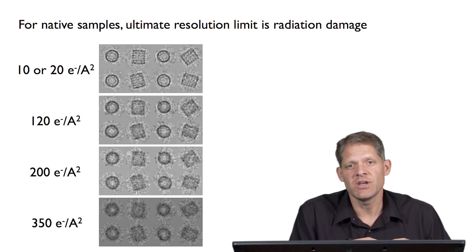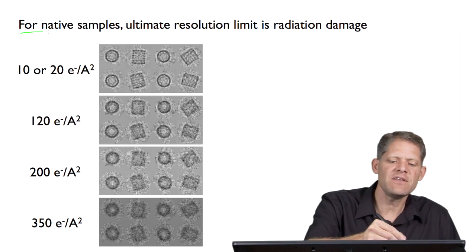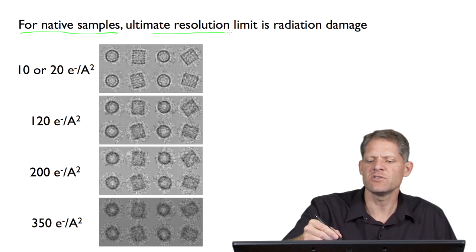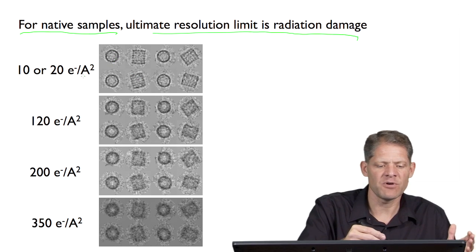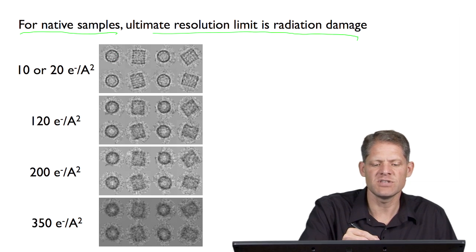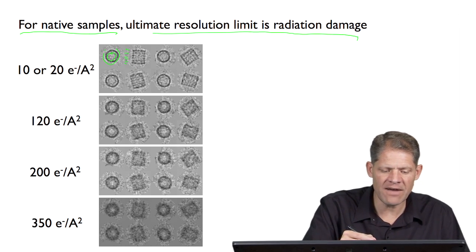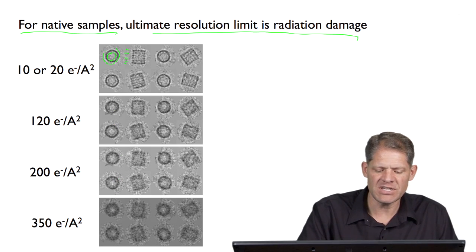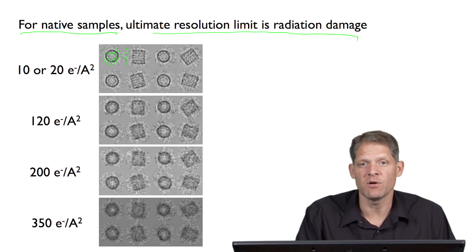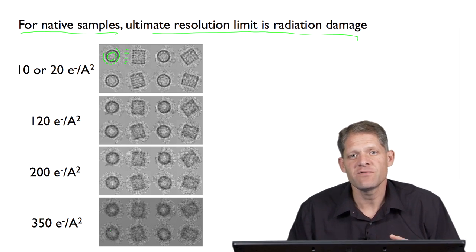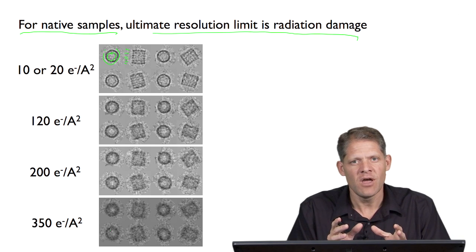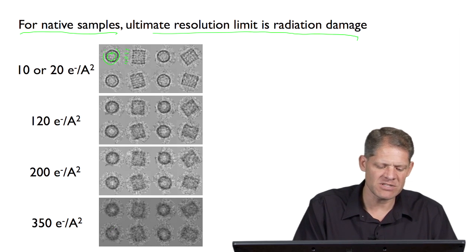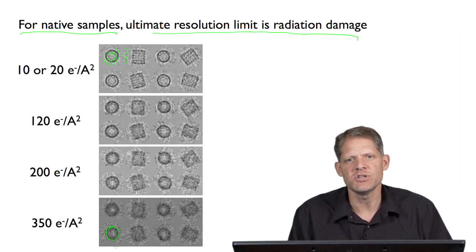The ultimate resolution limitation in tomography depends on what kind of sample we're imaging. For native samples, frozen hydrated material, the ultimate resolution limit is radiation damage. I showed earlier a series of hemocyanin molecules — after imaging with just tens of electrons per square angstrom, you could still see they were barrel-shaped, see the inner ring, and that they were stacks of six layers. But after applying 100 or even 200 electrons per square angstrom, those details were lost. The rough outlines of the particles were still present, but we can't fire enough electrons to get high-resolution detail before destroying the sample — leaving only blurry, lower-resolution remnants.